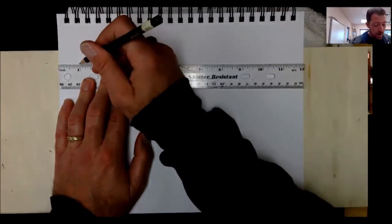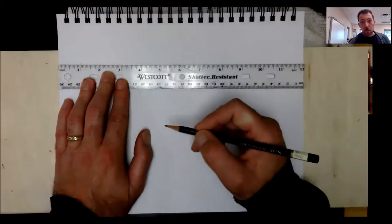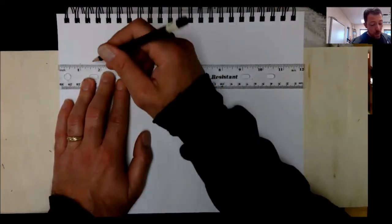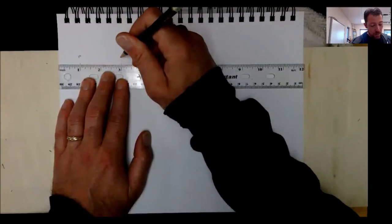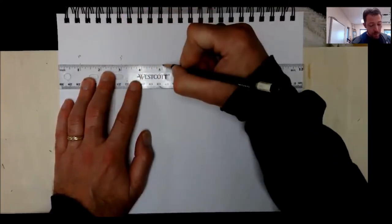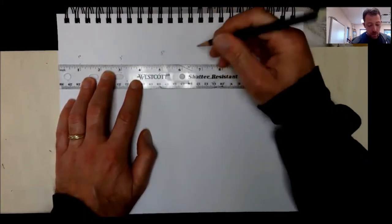I take an inch off the beginning and an inch off the end and have two inches for the width of each of my squares. So put one mark at one inch, a mark at three inches, a mark at five inches.